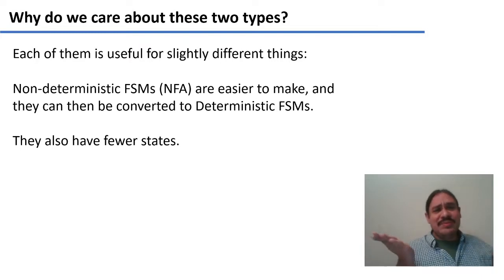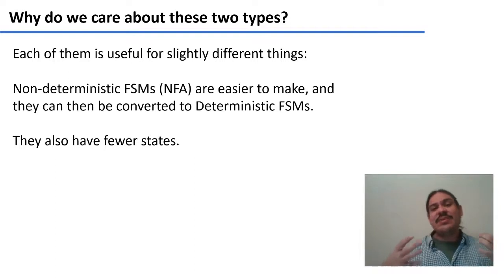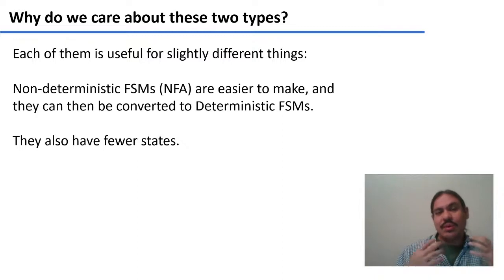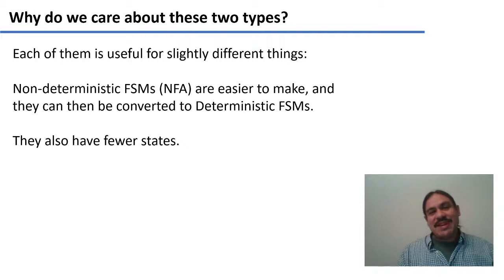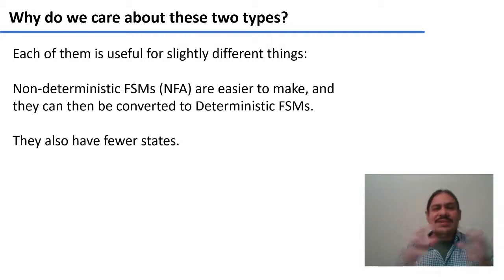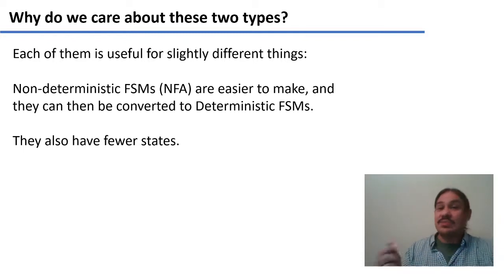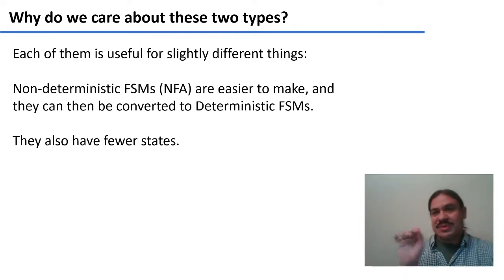So why would we even have two of them? They generate the same languages but have slightly different properties. Non-deterministic finite automata are easier to make — they're simpler and there are ways to convert them into deterministic finite state machines. They also have fewer states, so you can make more compact finite state machines when they are non-deterministic. As we saw, the non-deterministic one had two states and the deterministic one had three states.